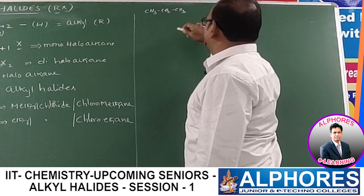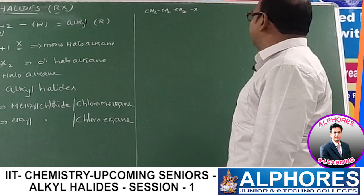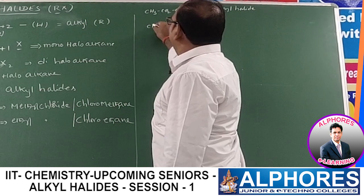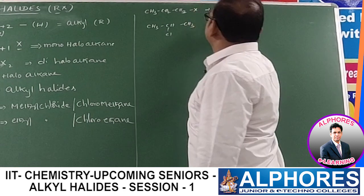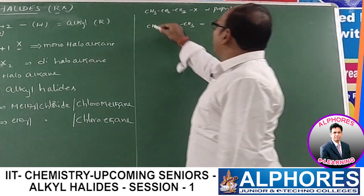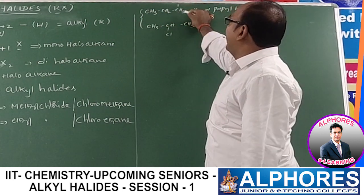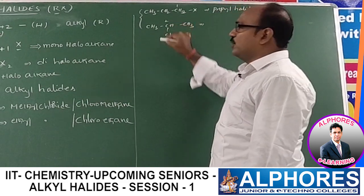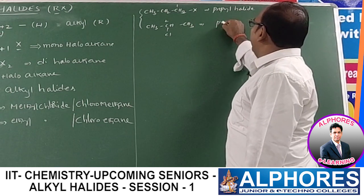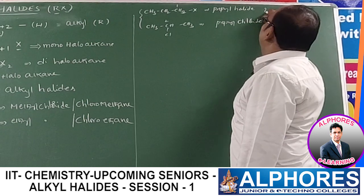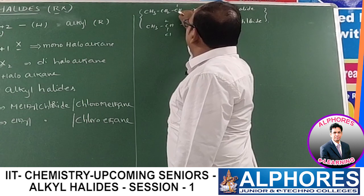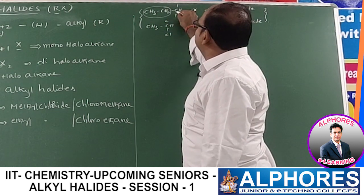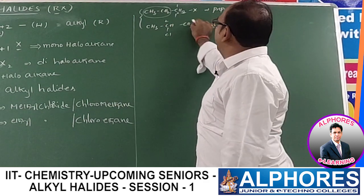From propane (n-propane), if we replace one hydrogen with a halogen atom, we get propyl halide. Observing the difference: in one case, hydrogen is removed from the first carbon and replaced by halogen — this is also propyl chloride. But if you notice, in this second structure, the halogen-containing carbon is attached to two alkyl groups. This distinction gives us primary and secondary classifications.